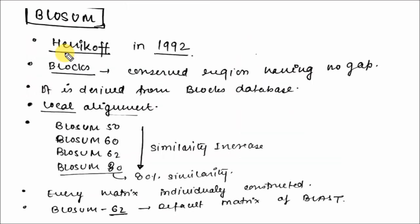The block substitution matrix or BLOSUM is derived by Henikoff. Blocks represent the conserved region having no gap. It is derived from the blocks database used for local alignment. What is local and global alignment? Local alignment is when you compare some stretches of the sequences. That is local alignment. And when you compare the whole genome or whole length of sequence, then it is global alignment.